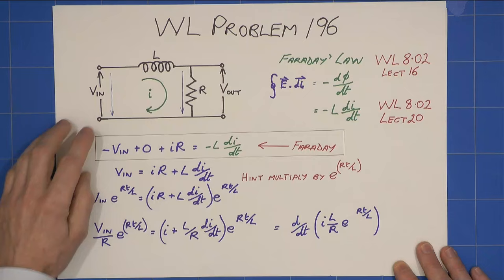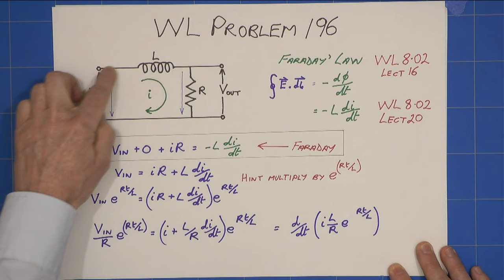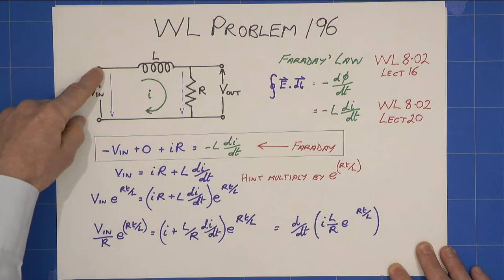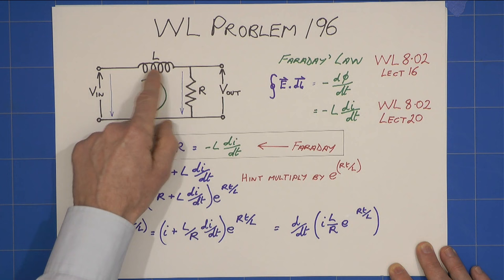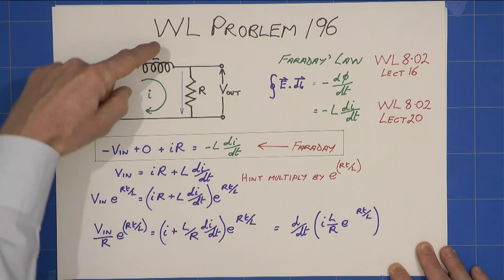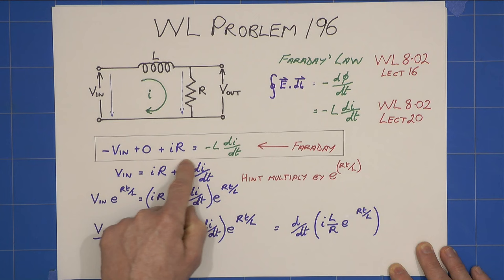So what we do, I will pick this point, I go around the loop. Now here I have a minus V in. I have nothing through the inductor, no e-field, remember we're only doing the e-fields this side. And then I have an ir down here. So there we go, and that gives us that side.